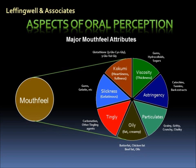Here we present the seven major factors comprising mouthfeel: viscosity, or perceived thickness in the mouth — think of a gummy bear. Astringency is the drying or puckering effect associated with things like tannic acid from wood bark. Particulates cause a grainy, gritty, chalky effect. The oily category can be both pleasant or unpleasant, such as a high butterfat ice cream like Häagen-Dazs, or an overly greasy hamburger. Tingly is most often associated with things like carbonation, or it can be the effect of a little black pepper. Slickness is associated with the slipperiness of gelatin or just a plain slimy mouthfeel. Kokumi is the elusive feeling of mouthfulness — think of a diet cola versus a regular cola. We'll discuss kokumi in more detail later.